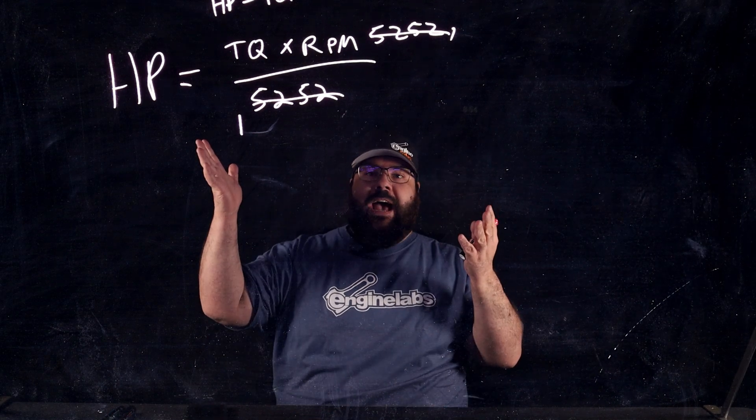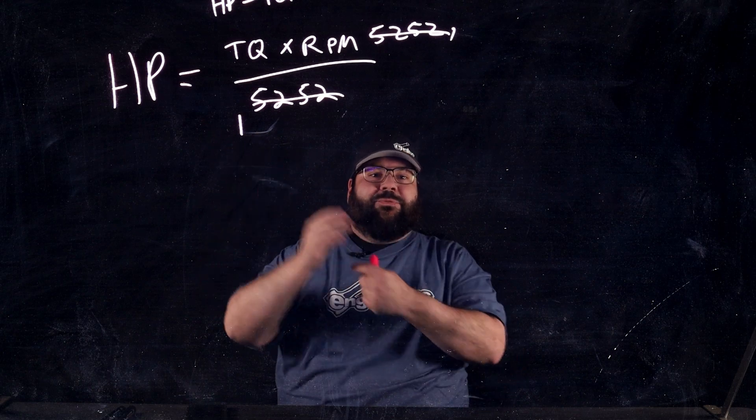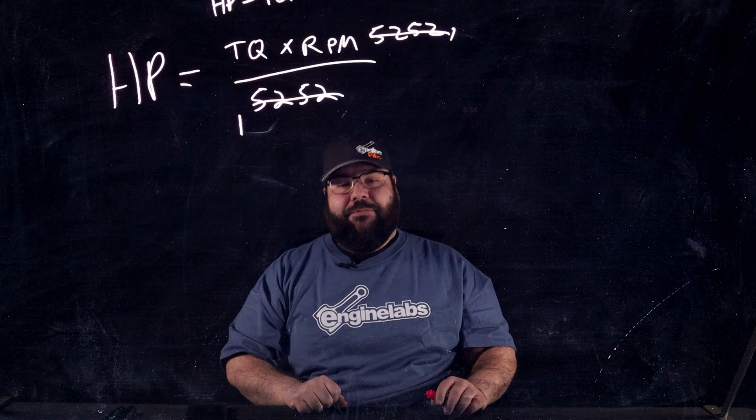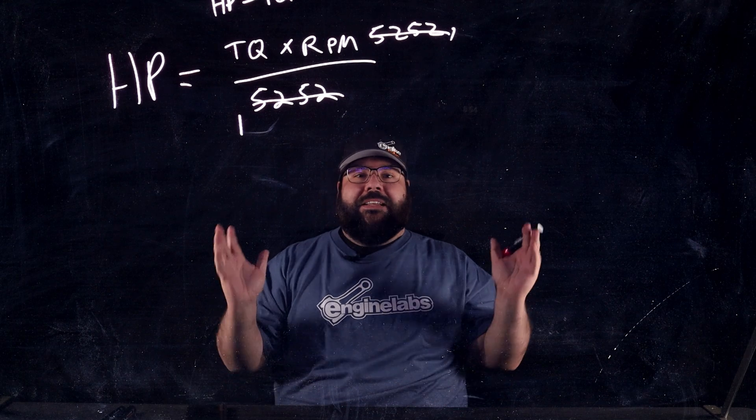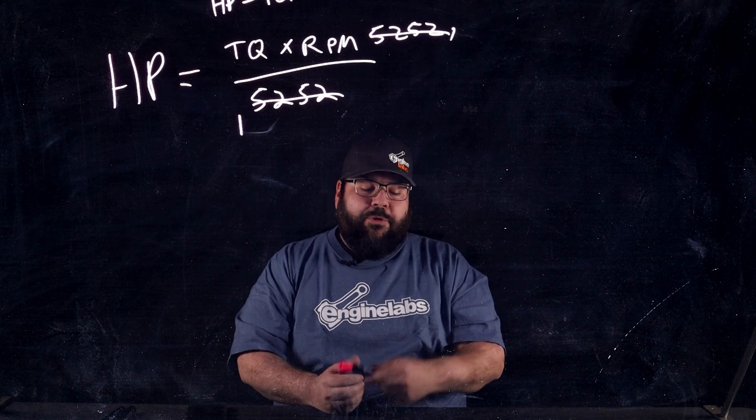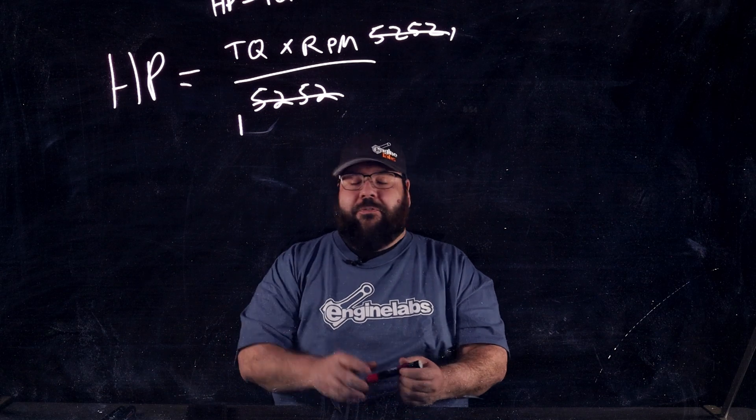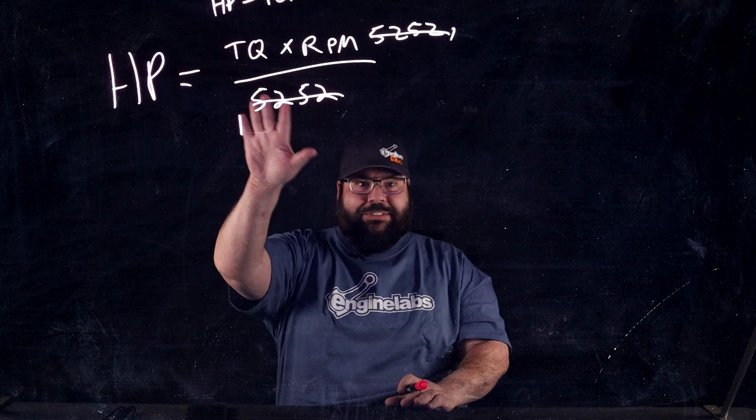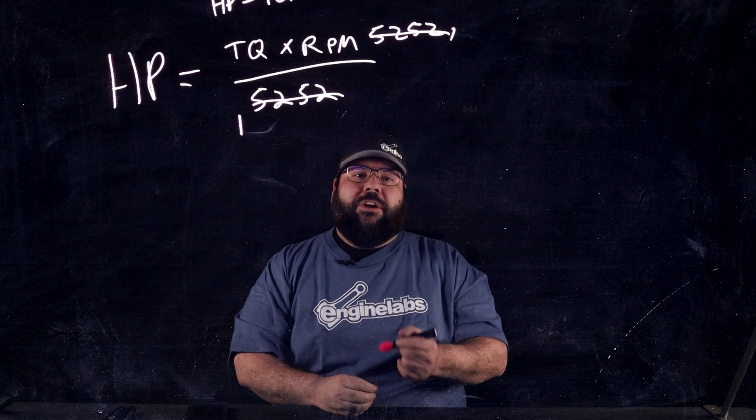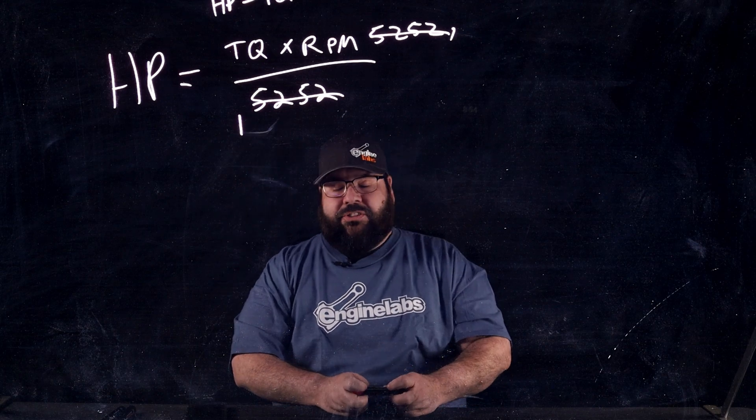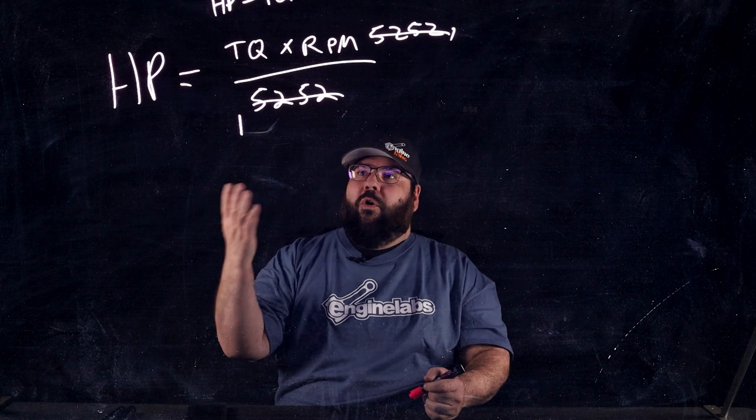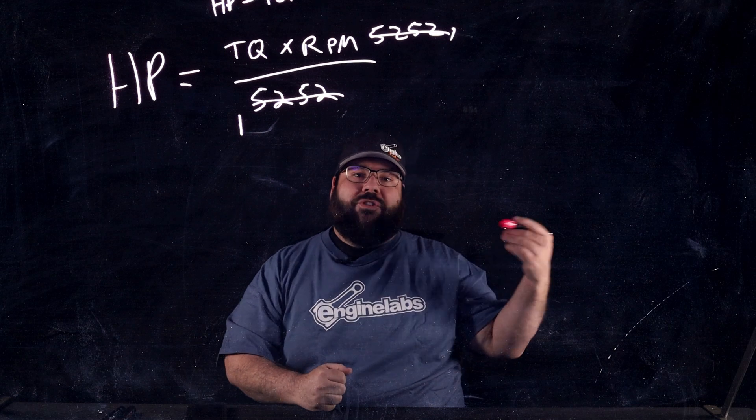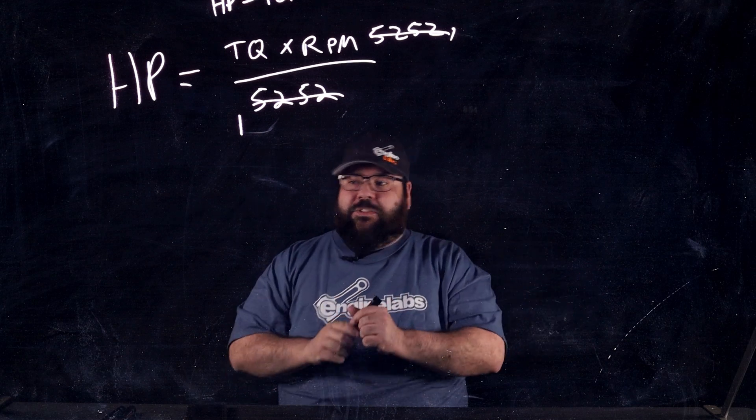All right, so there you have it. That's the answer. That is why mathematically, torque will always equal horsepower at 5252 RPM. But honestly, there's so much more to it than that. You might have heard horsepower referred to as torque over time. Mathematically, that's not quite correct, but grammatically, it's correct. Because horsepower is basically the number of times per second torque is happening. Let me explain.